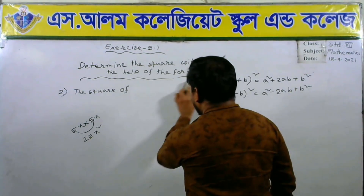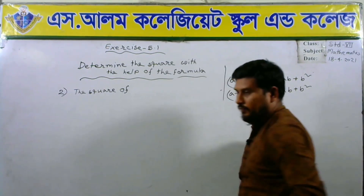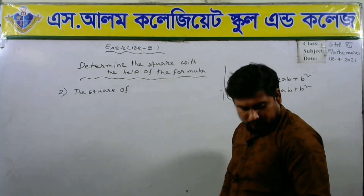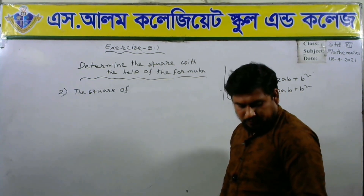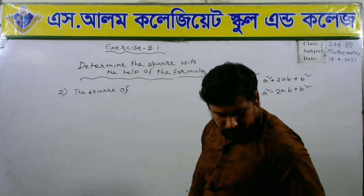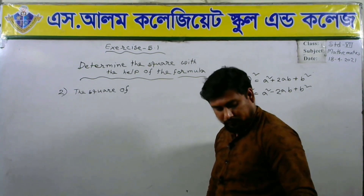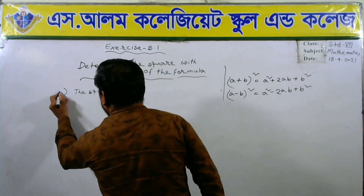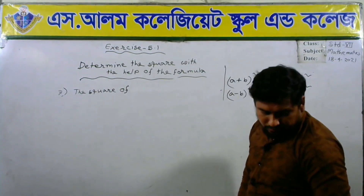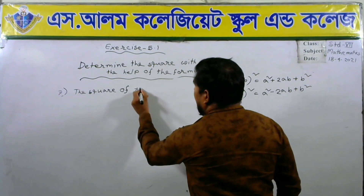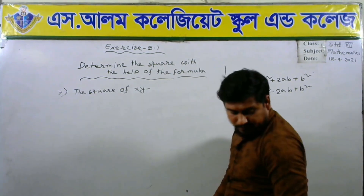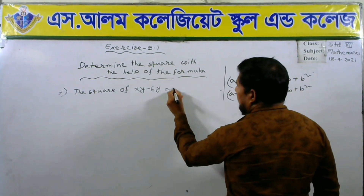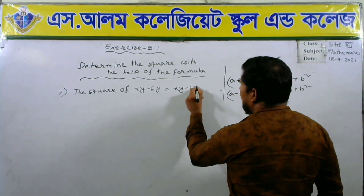We can solve another one with the help of the formula. Number 7: the square of xy minus 6y. The square of xy minus 6y equals — we can write xy minus 6y whole square.